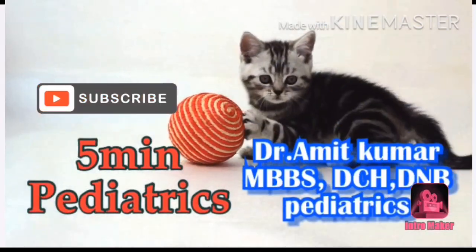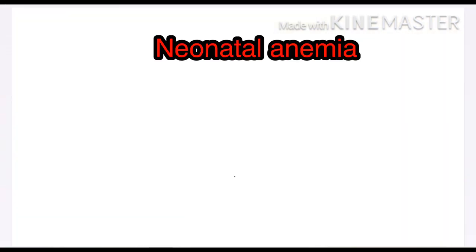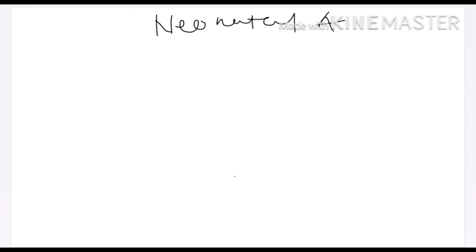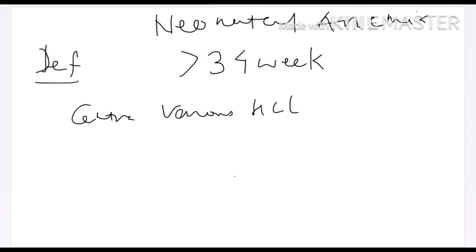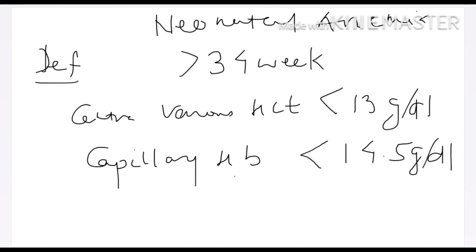Hello friend, welcome to my YouTube channel Five Minute Pediatric. Today we will discuss neonatal anemia. The definition is: if the gestation is more than 34 weeks and central venous hematocrit is less than 13 grams per deciliter, and capillary hemoglobin less than 14.5 grams per deciliter, this is the definition for neonatal anemia. The normal range is 14 to 20 grams per deciliter.